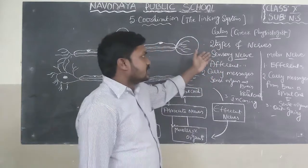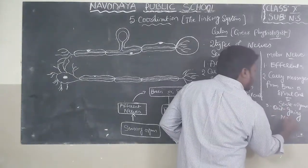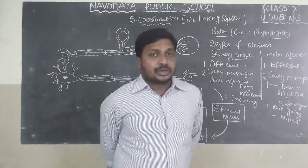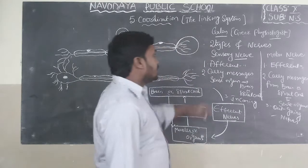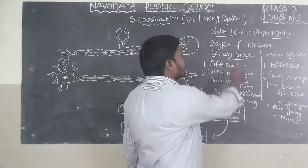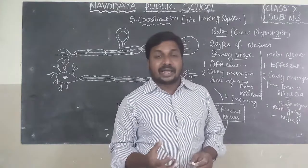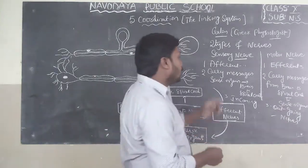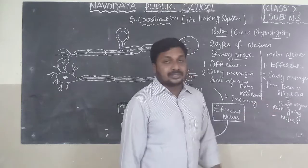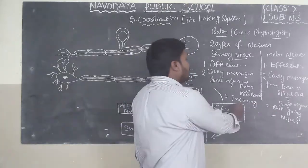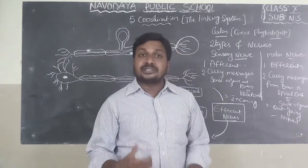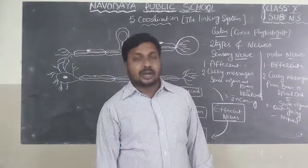These are the differences between sensory nerves and motor nerves. Sensory nerves carry messages from sense organs like eye, ear, nose, skin, and tongue to the brain or spinal cord. Motor nerves carry messages from the brain or spinal cord to muscles and sense organs. Sensory nerves are able to detect the sense of objects, while motor nerves are helpful for movement.